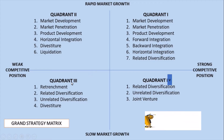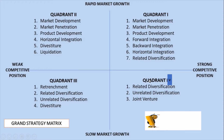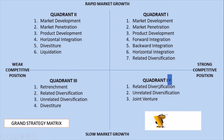Quadrant three is characterized by weak competitive position and slow market growth. Under quadrant three, we have retrenchment, related diversification, unrelated diversification, and divestiture. Quadrant four has a strong competitive position but slow market growth, and includes related diversification, unrelated diversification, and joint venture.